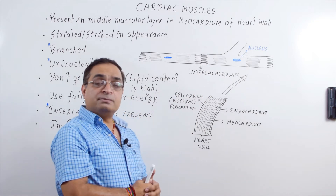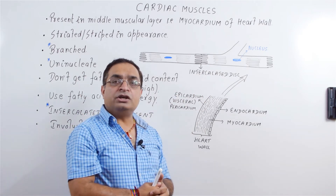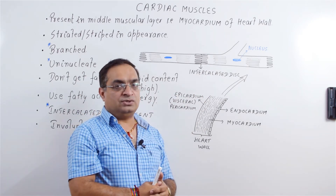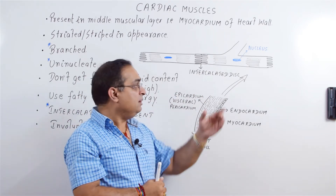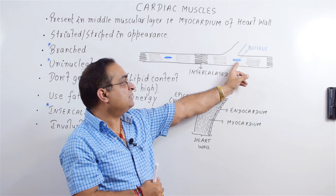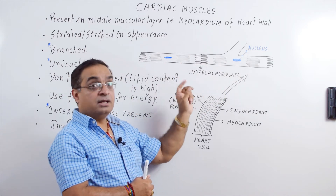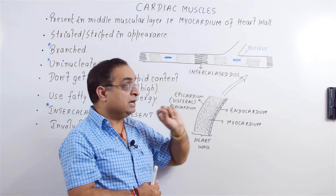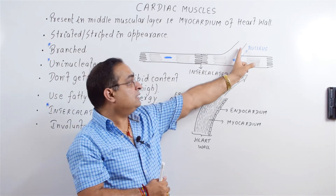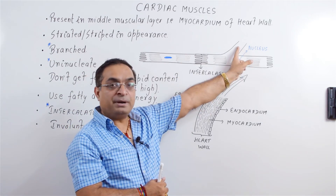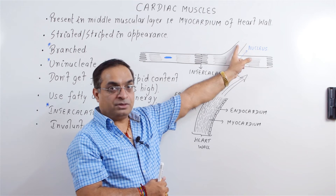Cardiac muscle fibers are uninucleate — they have a single nucleus, as shown in this diagram. These are also branched, and this diagram shows the branching pattern.